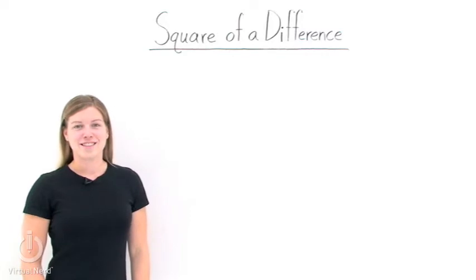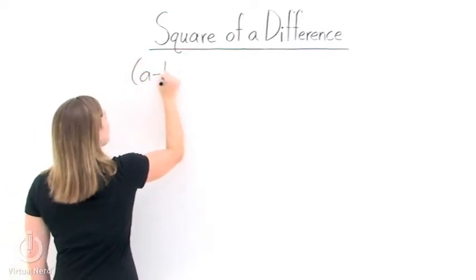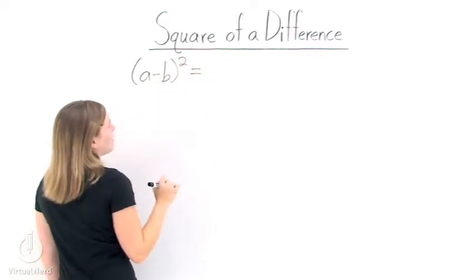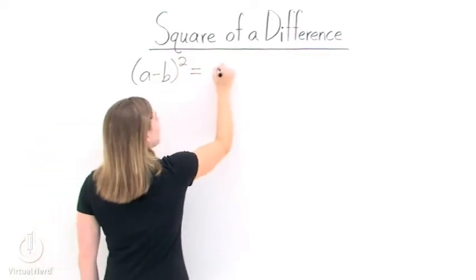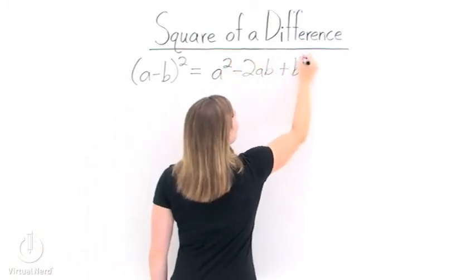Let's look at the square of a difference. The square of a difference is a formula that we use to help us find the square of a binomial. The formula goes like this: a minus b squared is equal to a squared minus 2ab plus b squared.